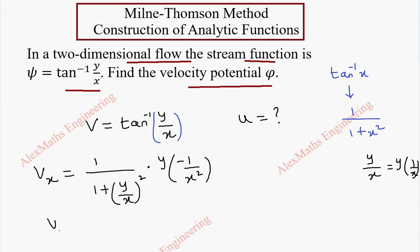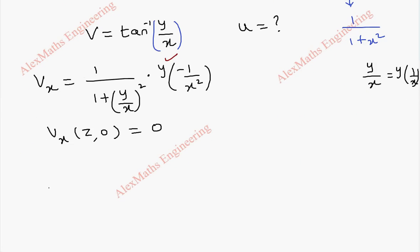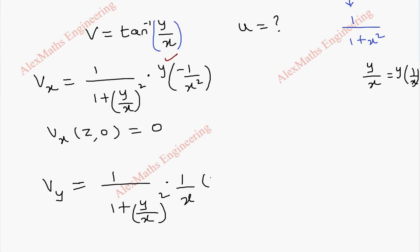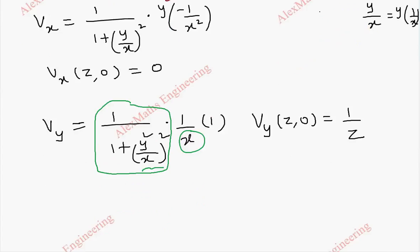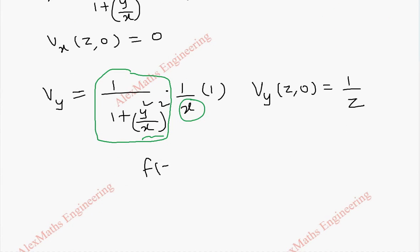To find Vx(z, 0), wherever x appears we put z and wherever y appears we put 0. With y = 0, the whole term becomes 0. Next, we find Vy: again 1/(1 + (y/x)²), but now x is constant, so the derivative of y is 1. Evaluating Vy(z, 0) with y = 0, the squared term vanishes, giving 1/(1) = 1, and the remaining factor is 1/z, so Vy(z, 0) = 1/z.